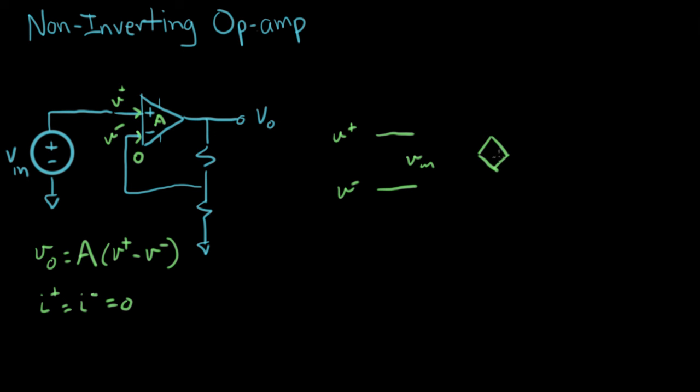And over on this side, we have a new symbol that you haven't seen before. It's usually drawn as a diamond shape, and this is a voltage source. But it's a special kind of voltage source. It's called a voltage dependent source.